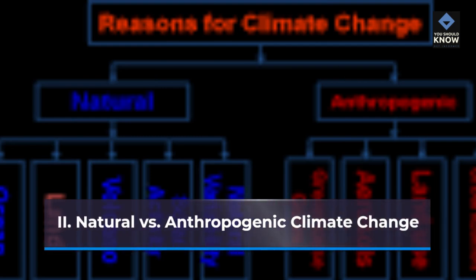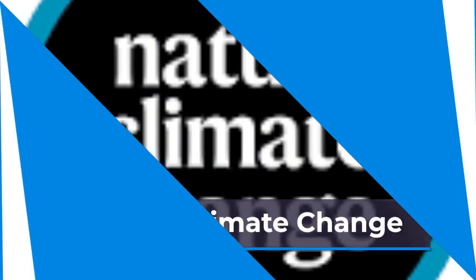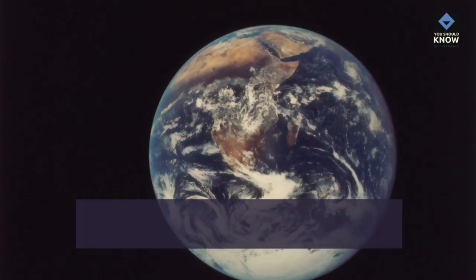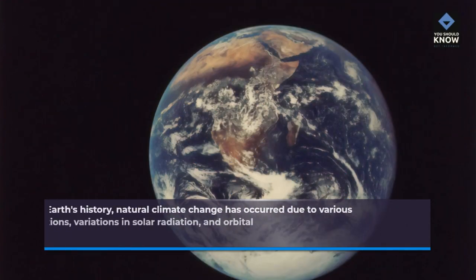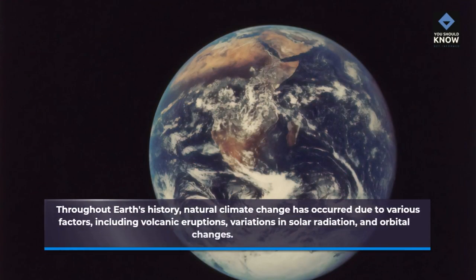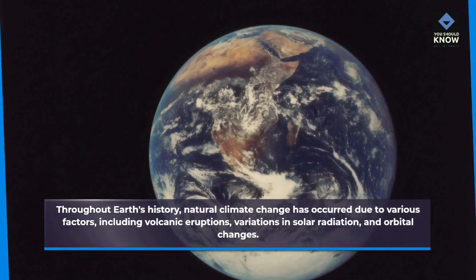Natural versus anthropogenic climate change. Throughout Earth's history, natural climate change has occurred due to various factors, including volcanic eruptions, variations in solar radiation, and orbital changes.